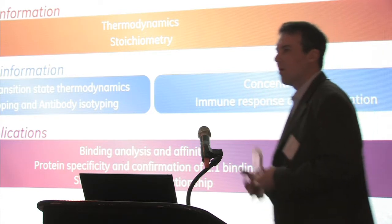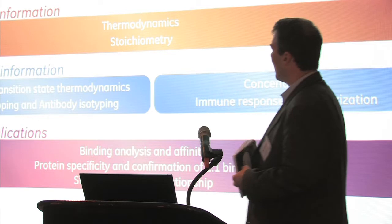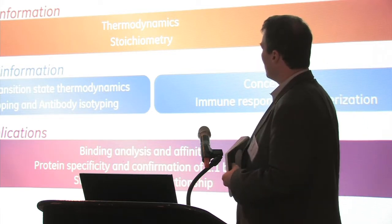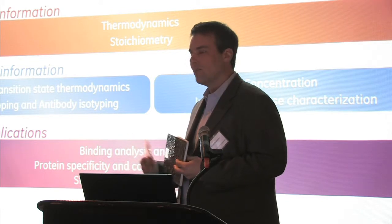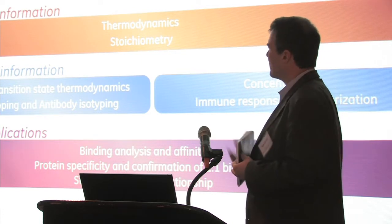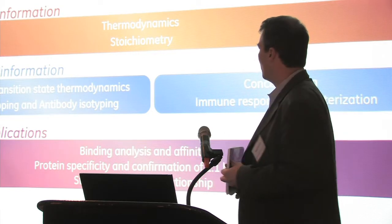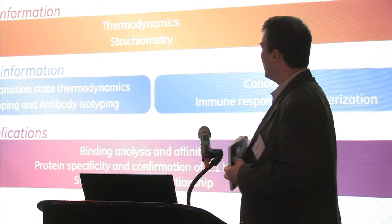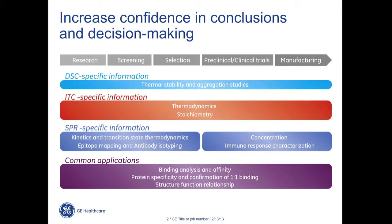ITC and SPR both give affinity, but they also give much more than that. Isothermal titration calorimetry gives you the thermodynamic profile of an interaction and the true stoichiometry. It fits nicely with SPR to confirm one-to-one binding for a particular interaction. SPR, on the other hand, defines the association and dissociation rate constants for an interaction. It can also be used as an indirect measurement of thermodynamics by looking at kinetics at different temperatures — though it's not a direct thermodynamic measurement as ITC is.